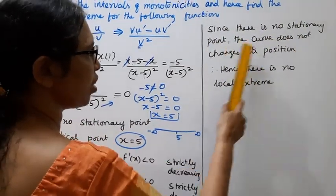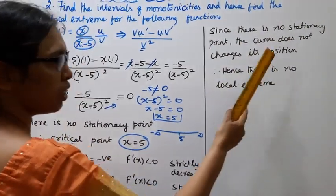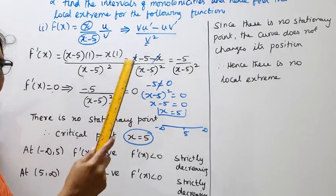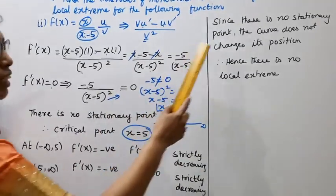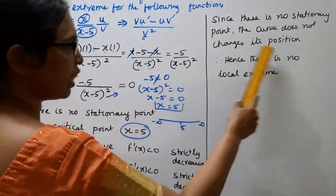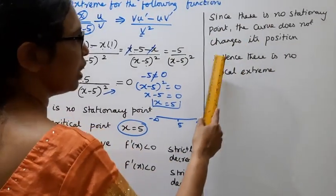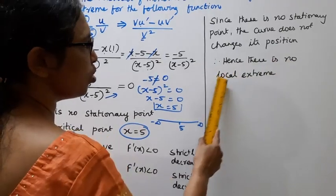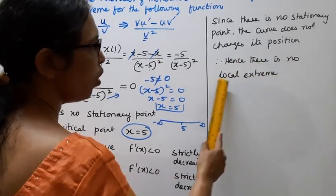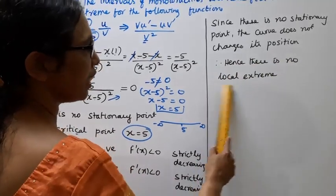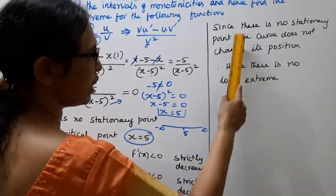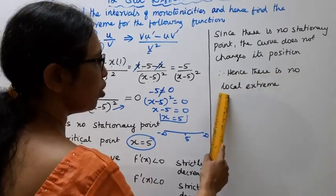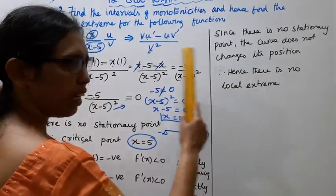Since there is no stationary point, the curve does not change its sign from positive to negative or negative to positive. Therefore, hence there is no local extremum.